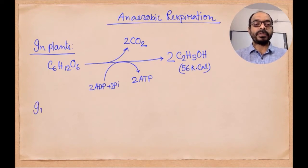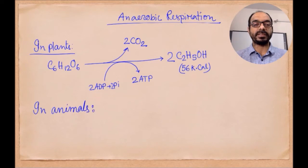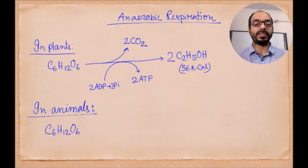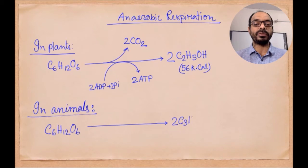In this process, from one molecule of glucose it produces 56 kilocalories of energy. In animals, aerobic respiration occurs in lower organisms. From one molecule of glucose in the animal body, it produces two molecules of lactic acid and two molecules of ATP.